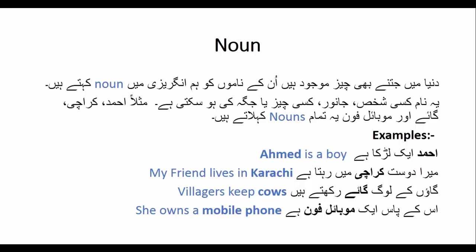مثلاً احمد، کراچی، گائے، موبائل فون، day، night، bed، آئس کریم — دنیا میں جتنی بھی چیزیں ہیں ان کے نام ہیں، ان ناموں کو ہم ناؤن کہتے ہیں۔ ناؤن کے بھی بہت سارے اقسام ہیں، ان اقسام کو صحیح معنی میں بہتر سمجھنے کے لیے ہم ناؤن کو سٹڈی کرتے ہیں۔